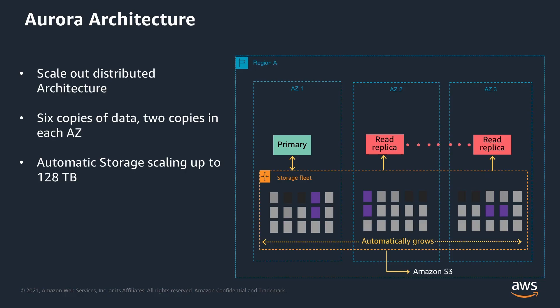Next, we'll discuss about Aurora architecture. With Amazon Aurora, we decouple the compute from the storage subsystem so they can scale independently. Aurora uses a scale-out distributed architecture that replicates a shared storage volume across three availability zones with two copies of data in each availability zone. The storage volume is segmented in 10-gigabyte protection groups and striped across hundreds or thousands of storage nodes depending on the size of the volume. This provides data redundancy and high availability. The storage volume uses a log-structured storage and is designed with database interactions in mind.